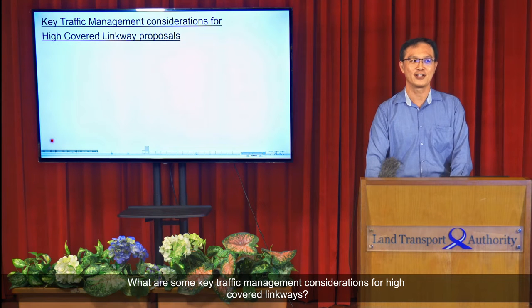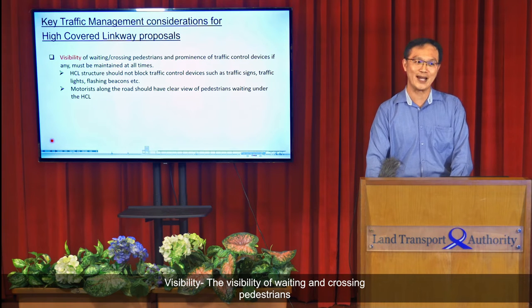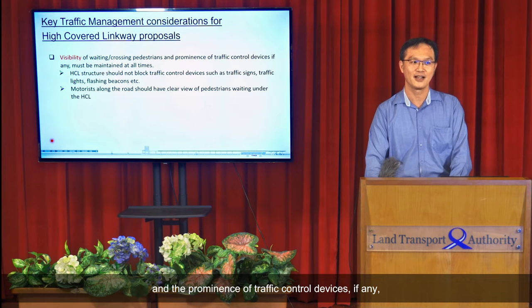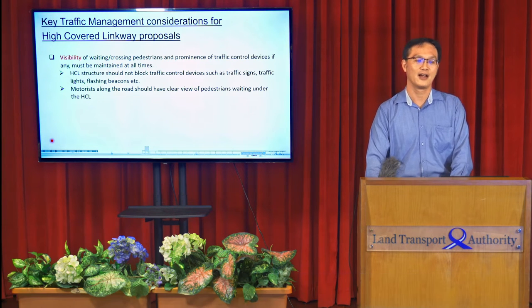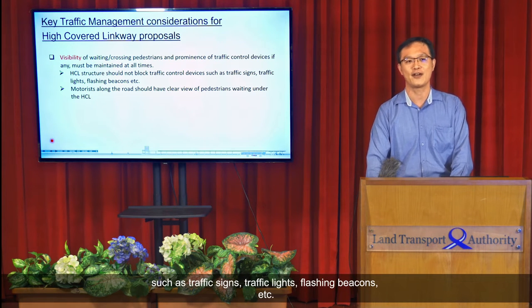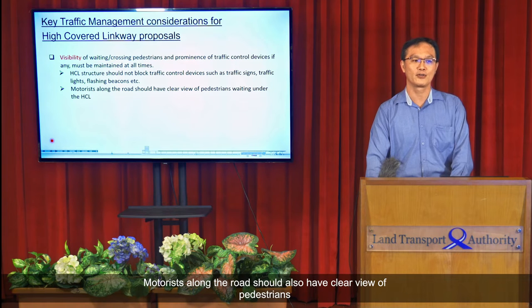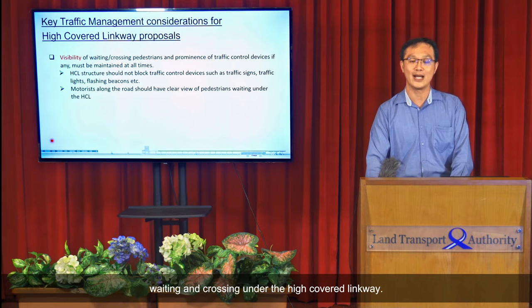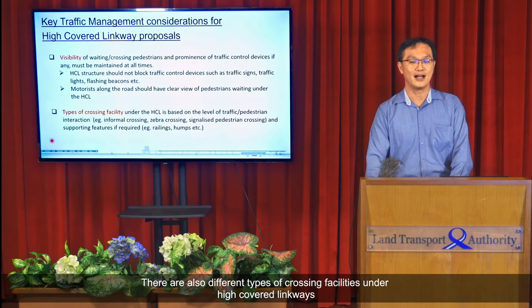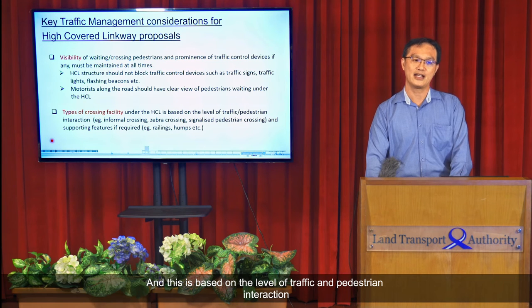What are some key traffic management considerations for High Covered Linkways? Visibility. The visibility of waiting and crossing pedestrians, and the prominence of traffic control devices if any, must be maintained at all times. HCL structures should not block traffic control devices such as traffic signs, traffic lights, or flashing beacons. Motorists along the road should also have a clear view of pedestrians waiting and crossing under the HCL. There are also different types of crossing facilities under HCLs, based on the level of traffic and pedestrian interaction.